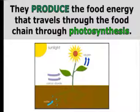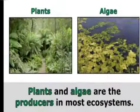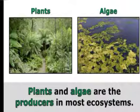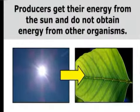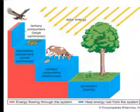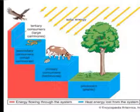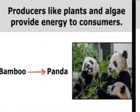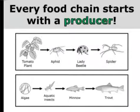The food energy travels through the food chain via the photosynthesis process. Plants and algae are the most common producers in ecosystems. They can absorb sunlight and prepare their own food. Producers get their energy from the sun and do not obtain energy from other organisms. Secondary consumers and primary consumers depend upon the producers like herbivores, carnivores and omnivores. Producers like plants and algae provide energy to consumers, like the panda on the slide. Energy in the food chain starts with the producer for every food chain.